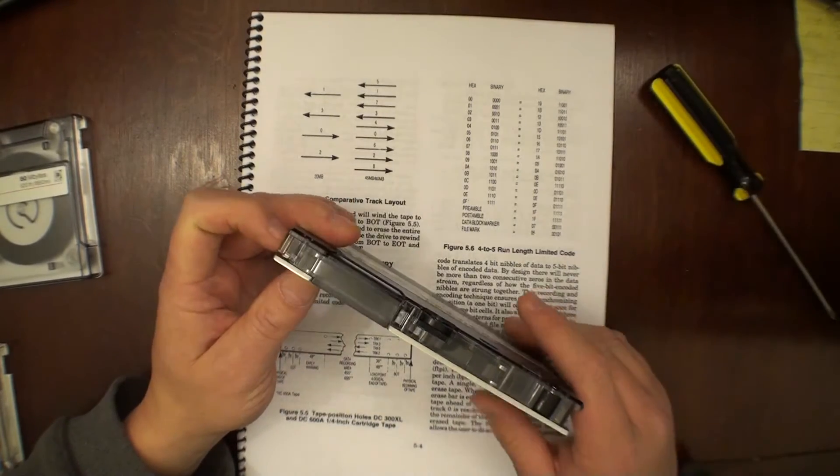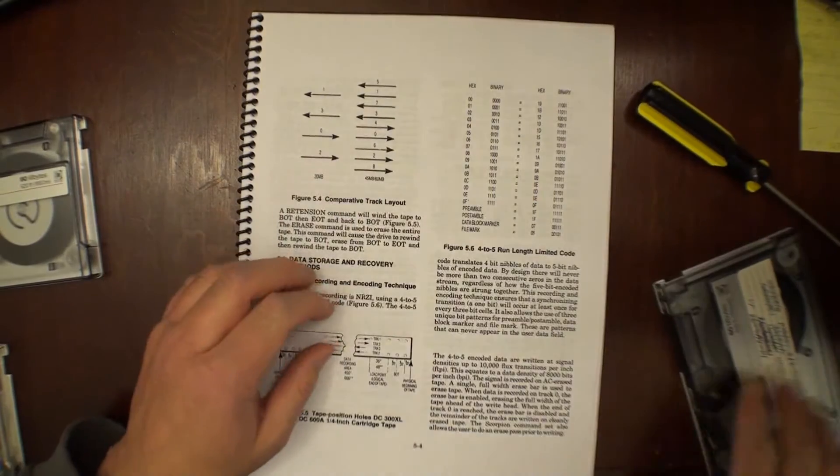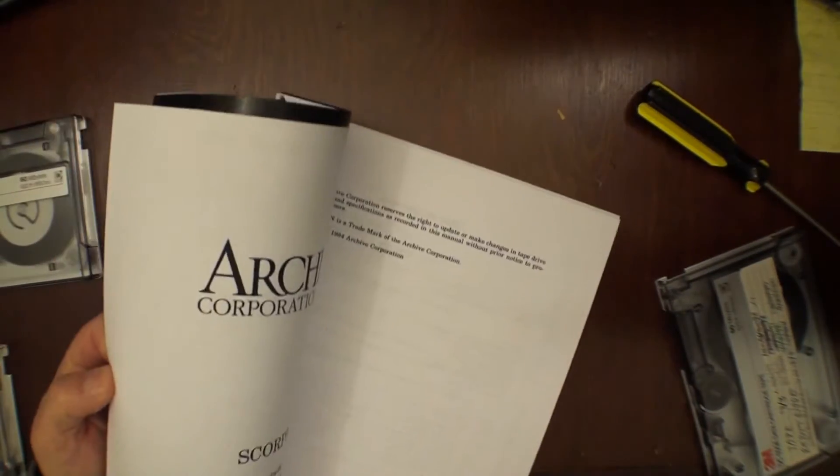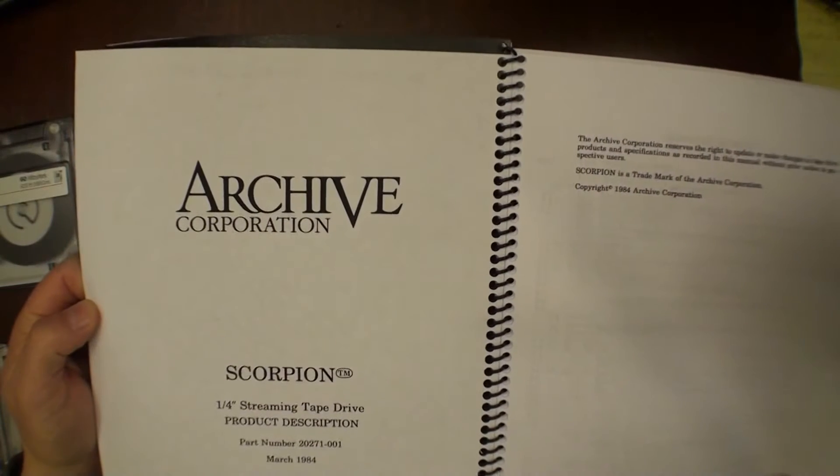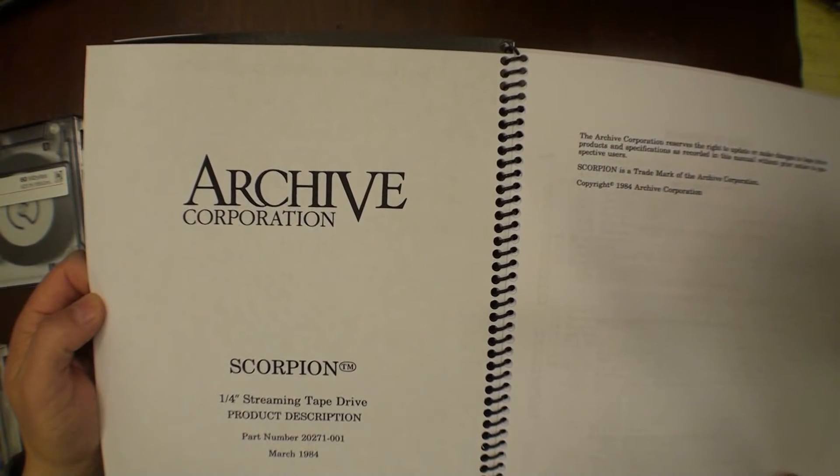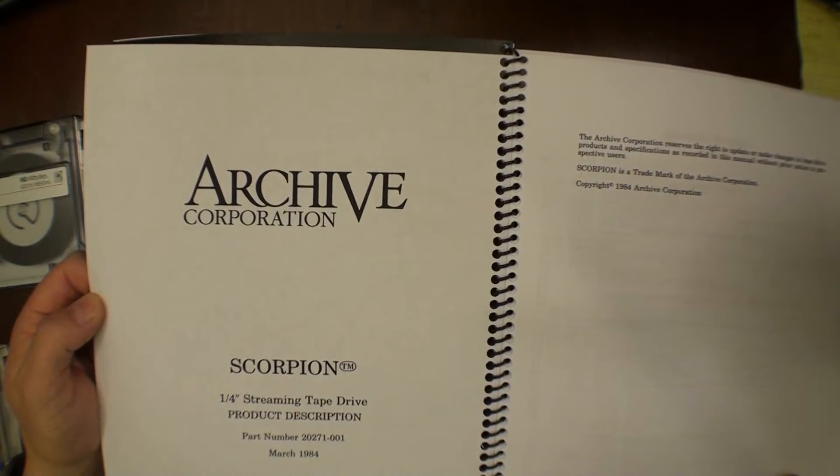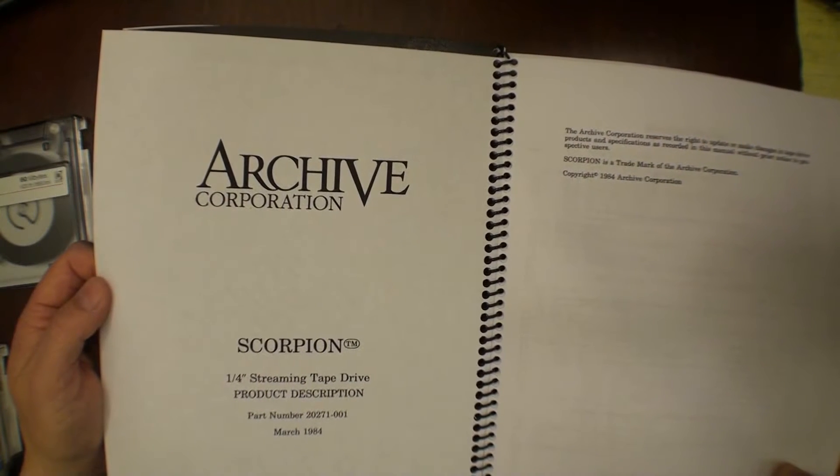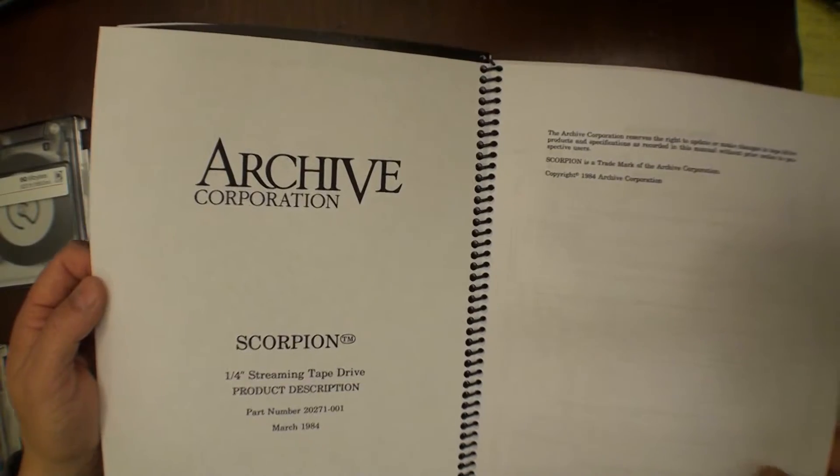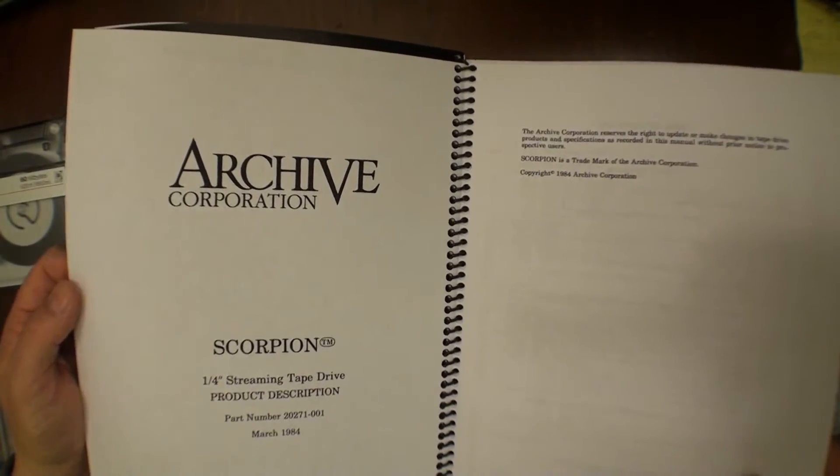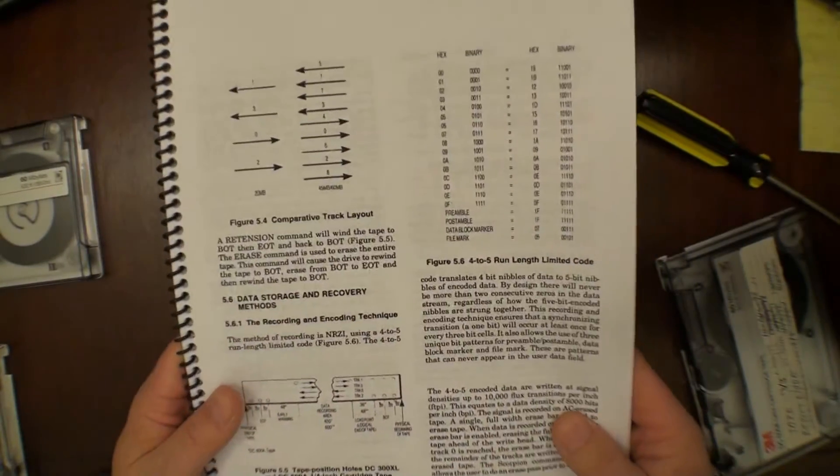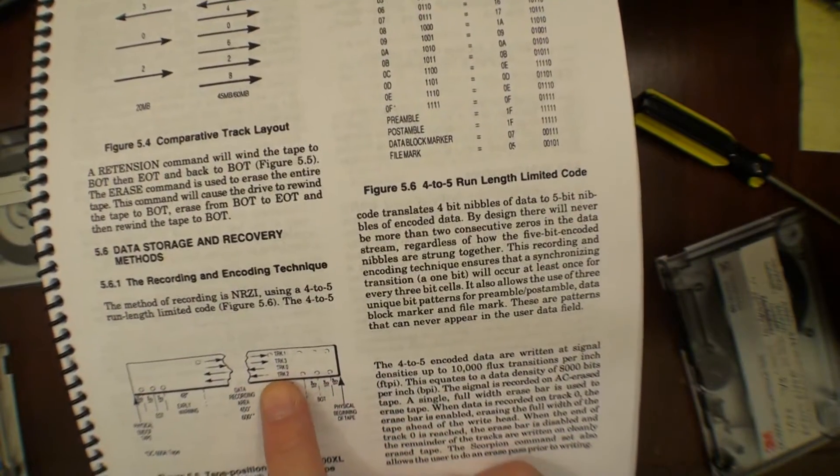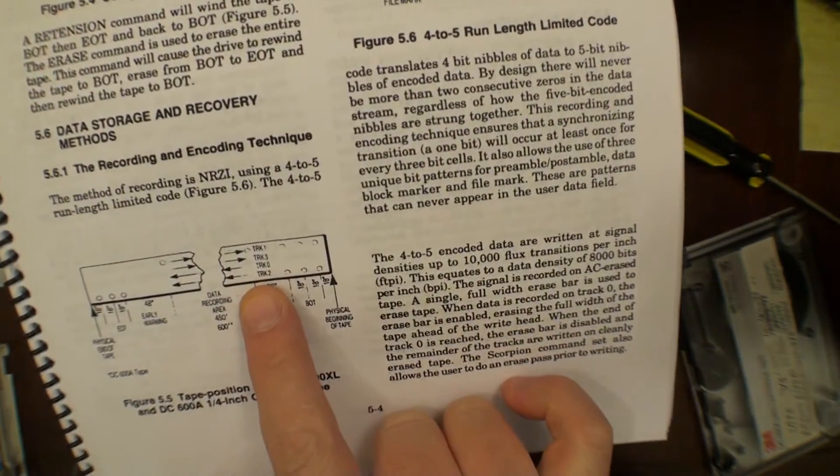So I did some research and this is a manual for Archive who made tape drives, the Archive Scorpion. This, I find, is a very helpful and educational manual for me for learning how these systems work because there's just not a whole lot of information available online. In this, it shows me actually how to be able to tell where you are visually in the position in the tape.